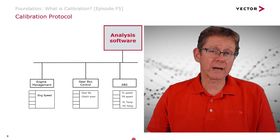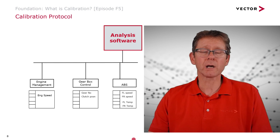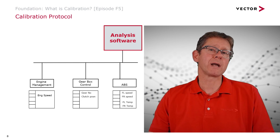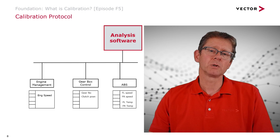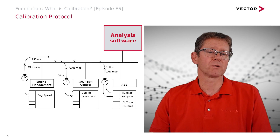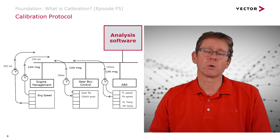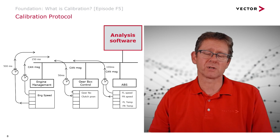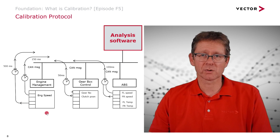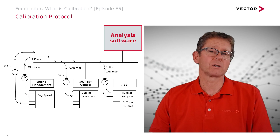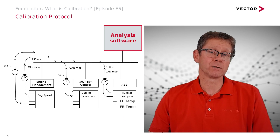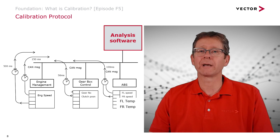Here's an example of a network. We've got three ECUs controlling the braking, ABS, the gearbox, and the engine management. Each of these ECUs has many parameters and signals. Some of them, but not all, are transmitted onto the network for the others to use — maybe every 100 milliseconds, every 500, every 50, every 250. In our engine management control unit we might have 10,000 signals, but not all of them will be sent on to the network for the other ECUs to use. So how do we access these hidden components? This is the task of measurement and calibration.